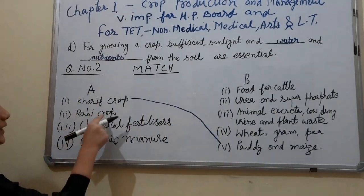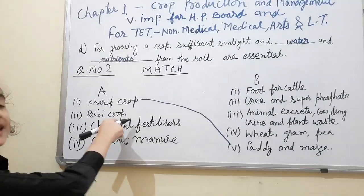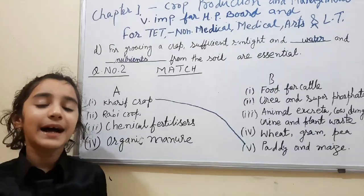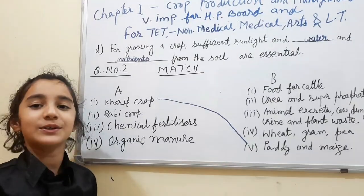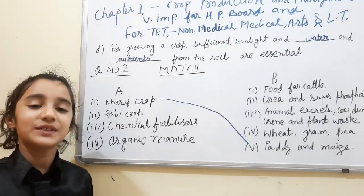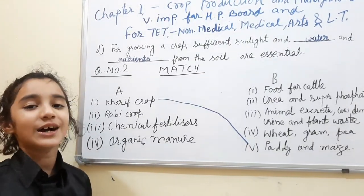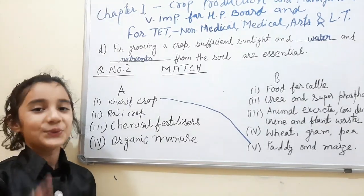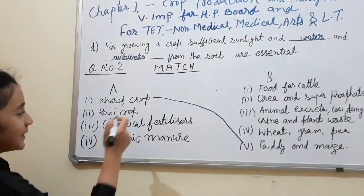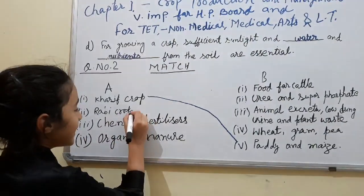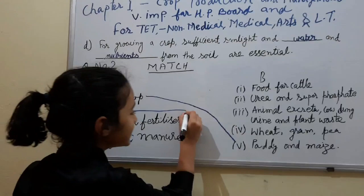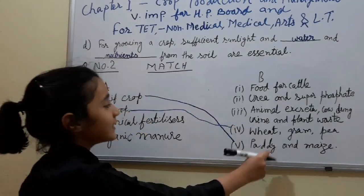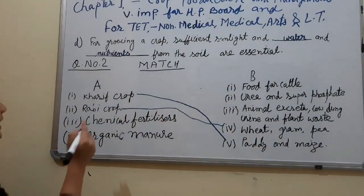Next — rabi crops. What will match with the rabi crops? I'll give you 3 seconds. Your time starts now. 1, 2, 3. Your time is up. The correct answer to it is: wheat, gram, and pea.